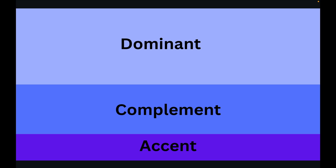The complement color is 30%. The complement color is used for text, icons, and other UI elements. When you use the dominant color, the complement color should be visible and have good contrast — you use the same complement color consistently.